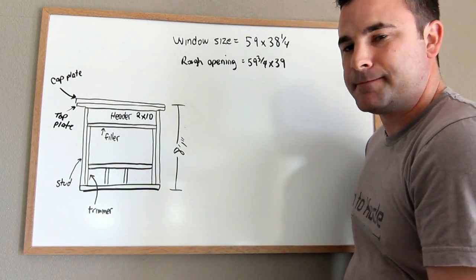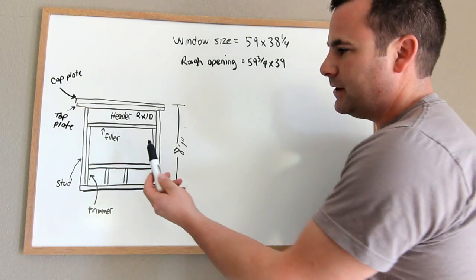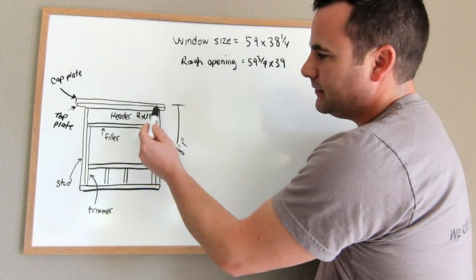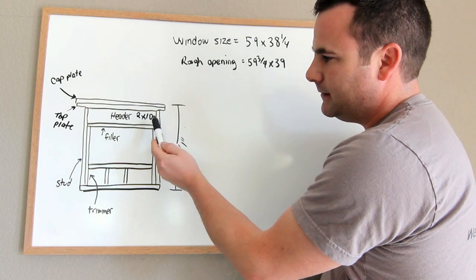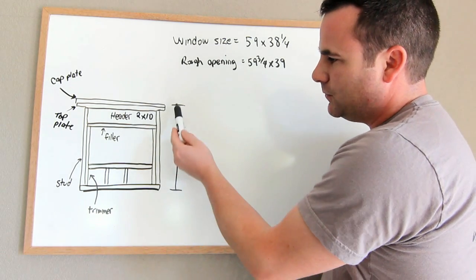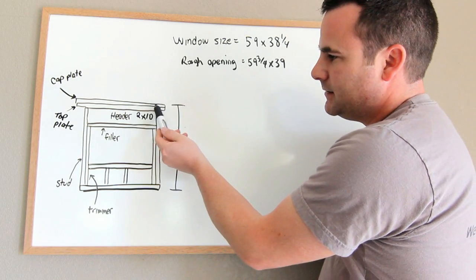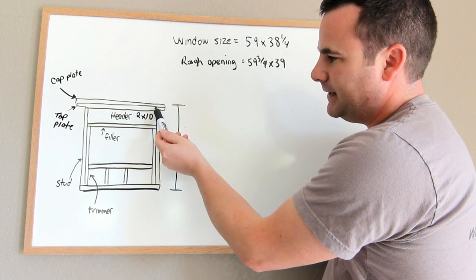Now typically, you put your header right at the top, right underneath your top plate and your cap plate. That's because, let's say your total wall height is 8 foot 1, you lose 3 inches there for your 2 plates.